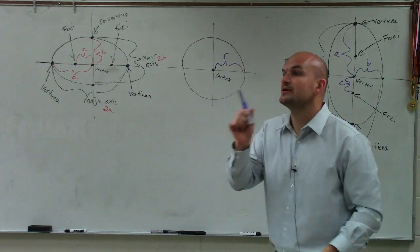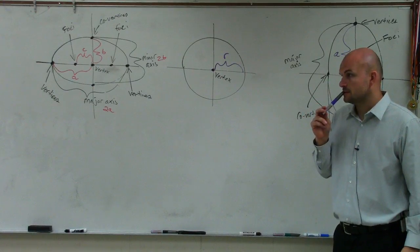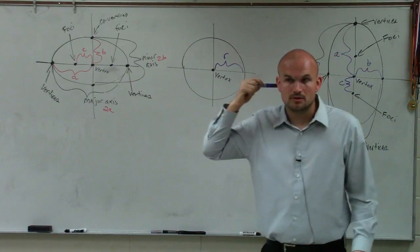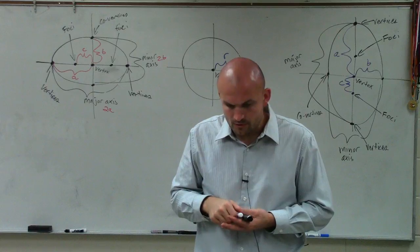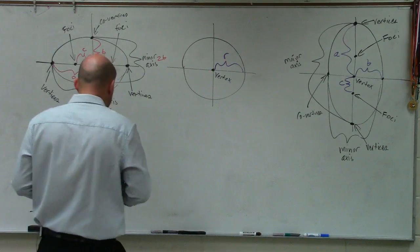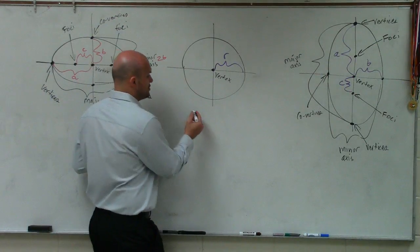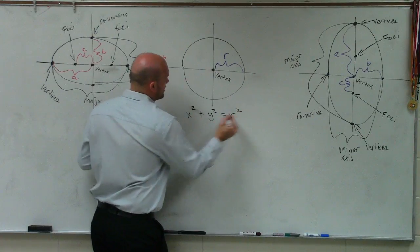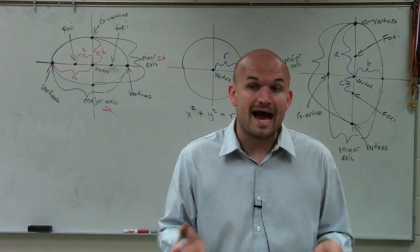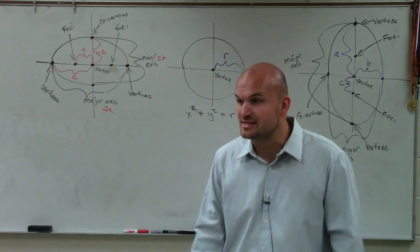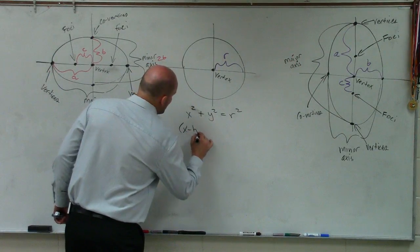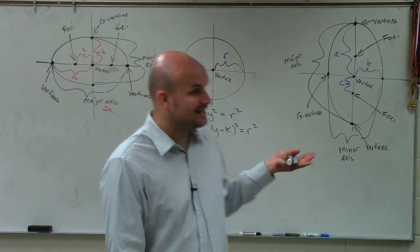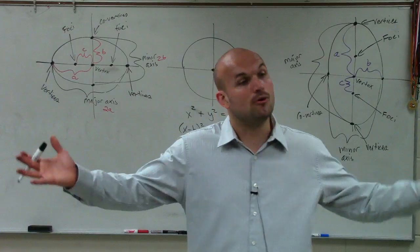In geometry class, a lot of you learned the definition of a circle: x squared plus y squared equals r squared. We've been talking about h and k representing our vertex, so now we say it's (x minus h) squared plus (y minus k) squared equals r squared. Whatever your number at the end equals — say it's 16 — then your radius is 4. But for ellipses, our vertices are a little bit different.